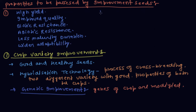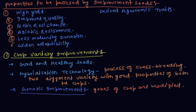The seventh and last property is desired agronomic traits. So these seven properties — from first to seventh — are the properties to be obtained from improved seeds.